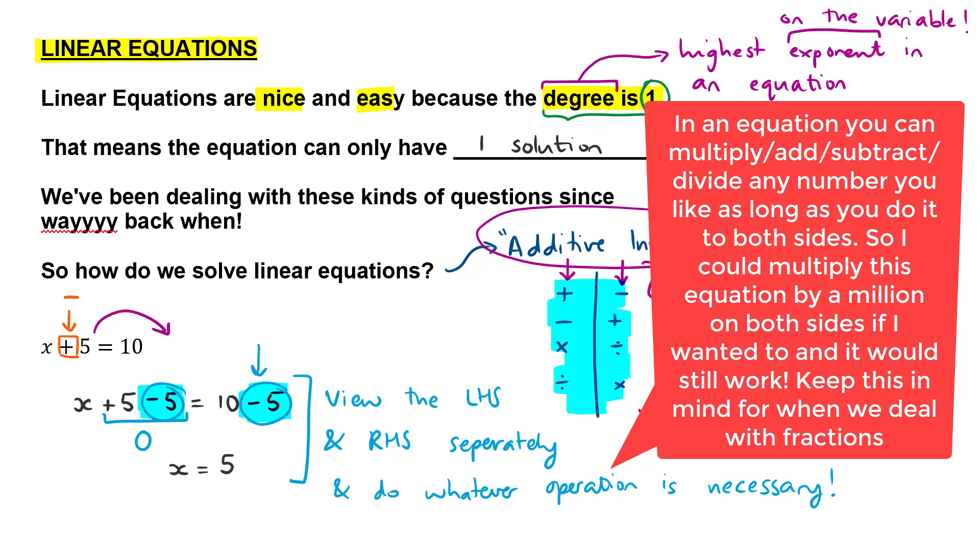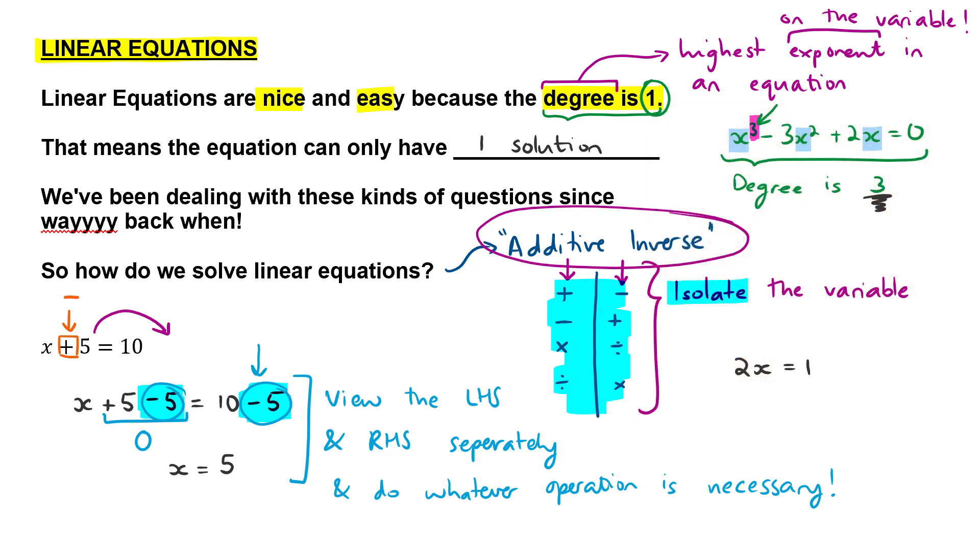Same as if I gave you something like 2x is equal to 10, I'm not moving the two over. Instead, I'm dividing both sides of the equation by two, then the twos there would cancel and I would be left with x is equal to five.